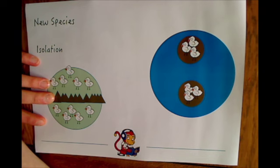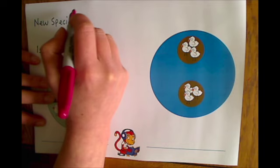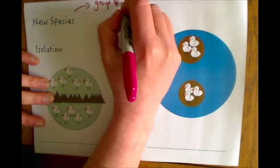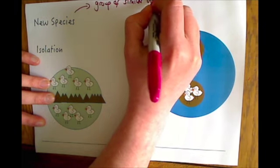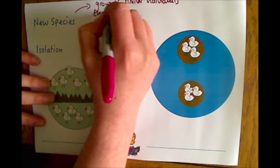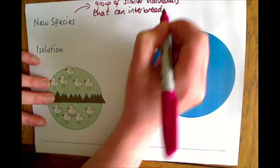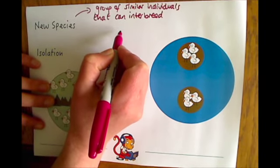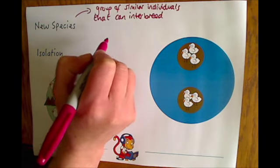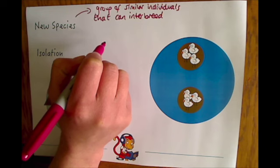Hello and welcome to this video about making new species. A species of animals is a group of similar animals or similar individuals that can interbreed. So if the animals can breed with each other and produce offspring, they are of the same species. If they can't breed with each other and produce offspring, then they are considered two different species.